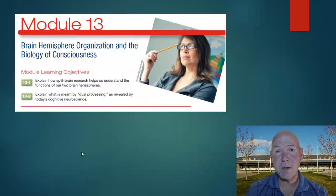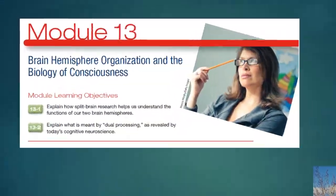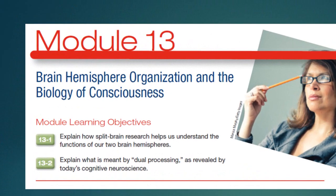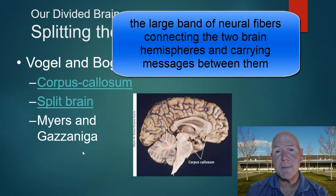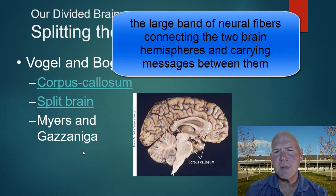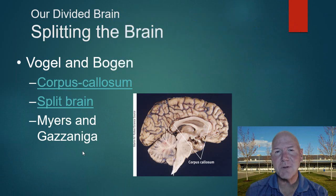We're on to our fourth video of Biological Basis of Behavior, starting with Module 13: Brain Hemisphere Organization and the Biology of Consciousness. Your brain consists of two hemispheres joined together by a structure called the corpus callosum, which is a bundle of white matter running through the middle of your brain. Its job is not just to hold your brain together, but also to send messages between your right and left hemispheres.